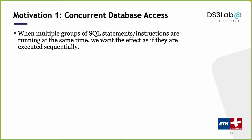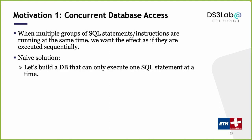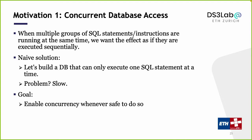Essentially, when multiple groups of SQL statements run at the same time, we want the effect to be as if they executed sequentially. We do not want them to physically run sequentially because that is slow, but we want the same effect. This is one of the goals of transactions. A naive solution is to allow only one SQL statement or transaction to run at a time — correct but too slow. The real goal is to enable concurrency whenever it is safe to do so.